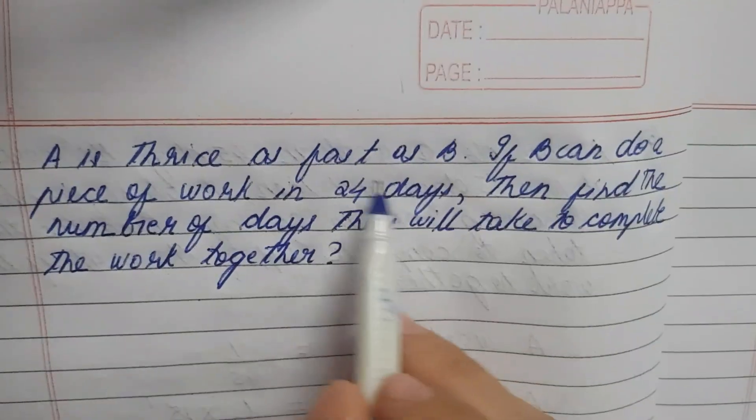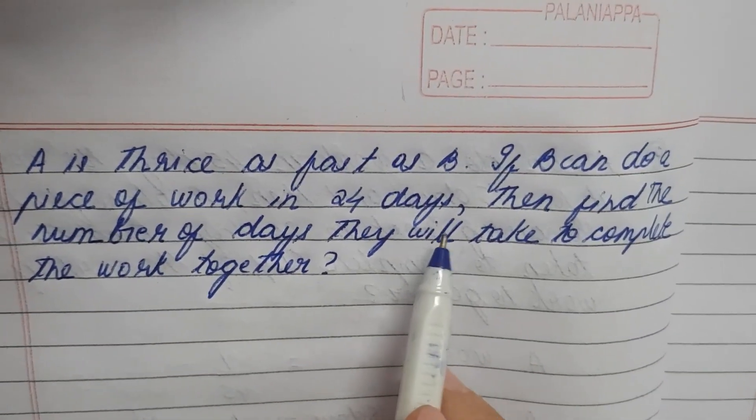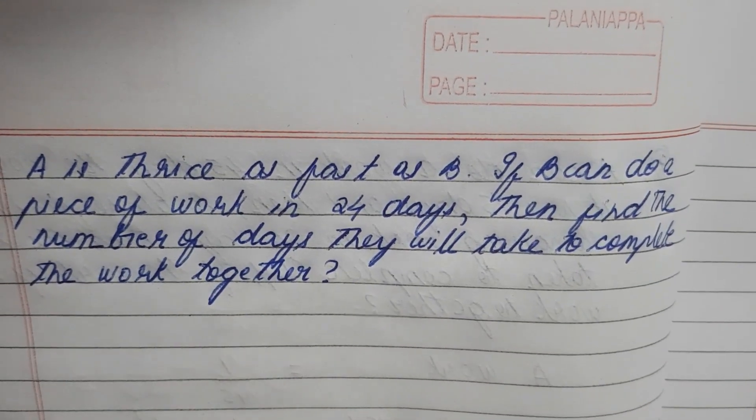A is thrice as fast as B. If B can do a piece of work in 24 days, then find the number of days they will take to complete the work together.